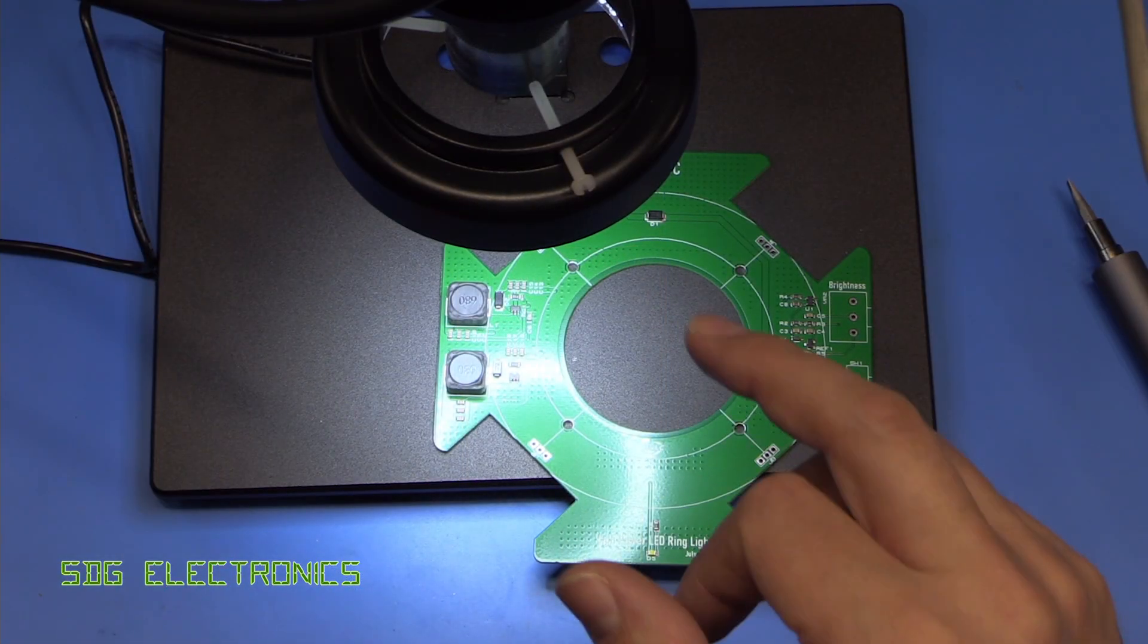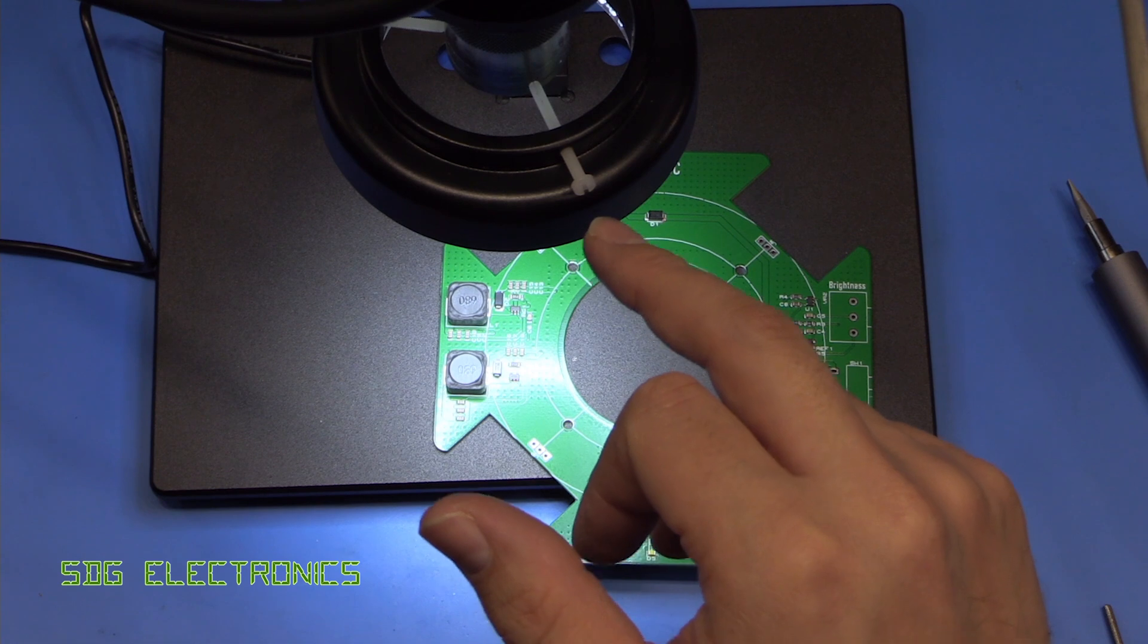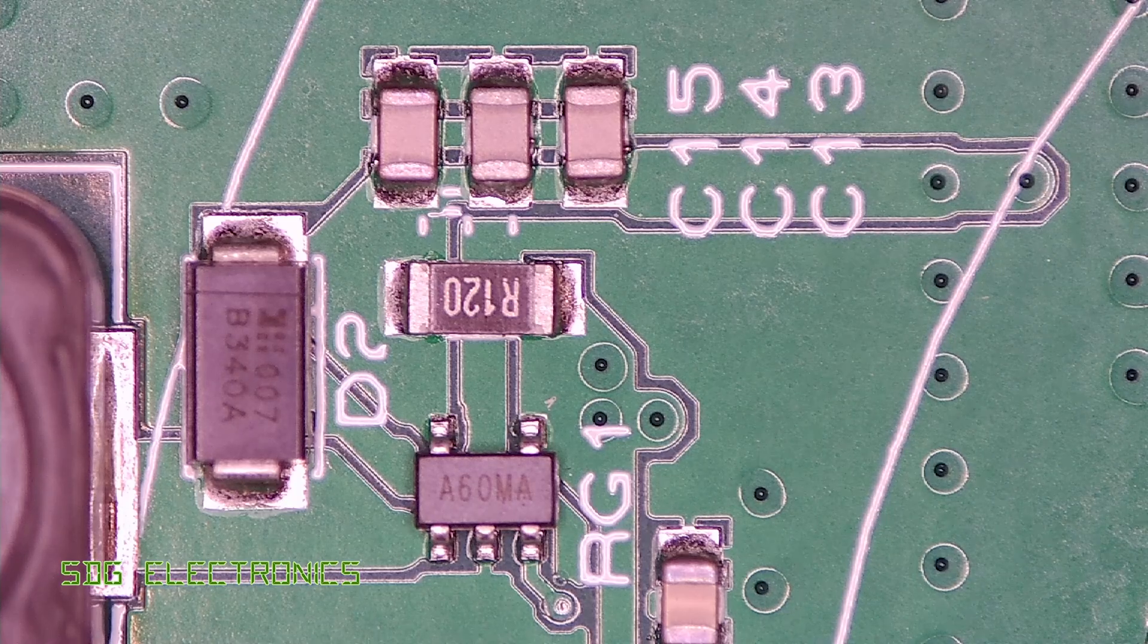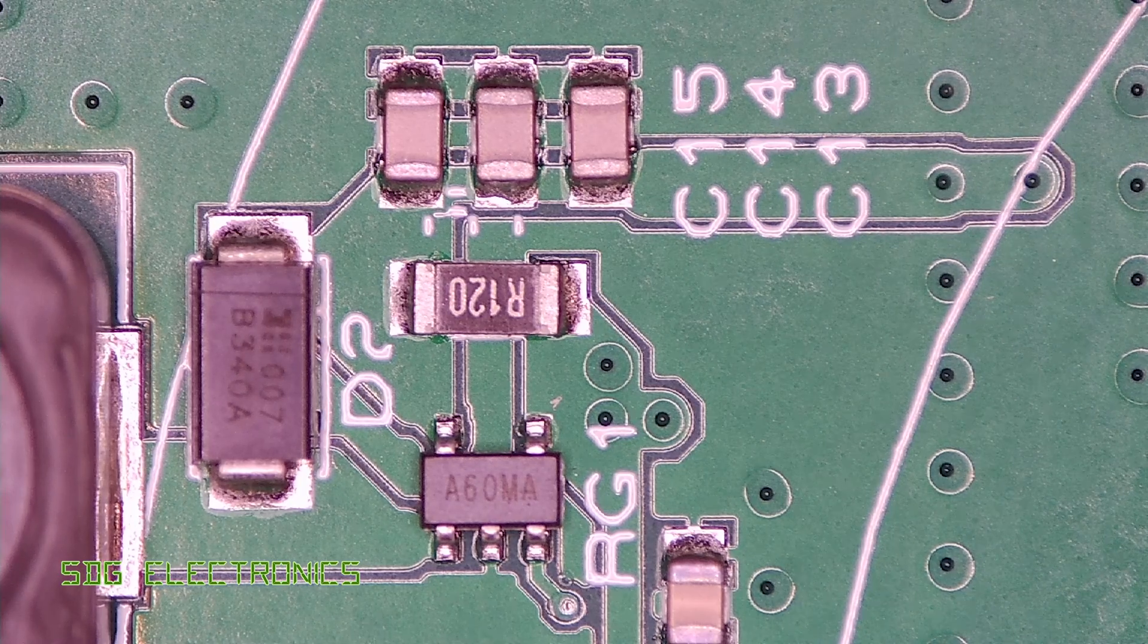So I've got it all set up. I managed to get the LED ring light attached with some longer screws just temporarily. So let's have a look at what the image quality is like. And that actually looks really quite good to me.